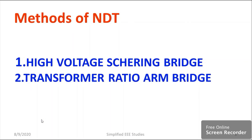Let us discuss the different methods of NDT in the field of high voltage engineering. As far as high voltage engineering is concerned, there are two methods of NDT available: the first method is the high voltage Schering bridge and the second method is known as the transformer ratio arm bridge. I will discuss both of these methods in the upcoming sessions. These are the popular methods applicable in NDT for high voltage engineering.